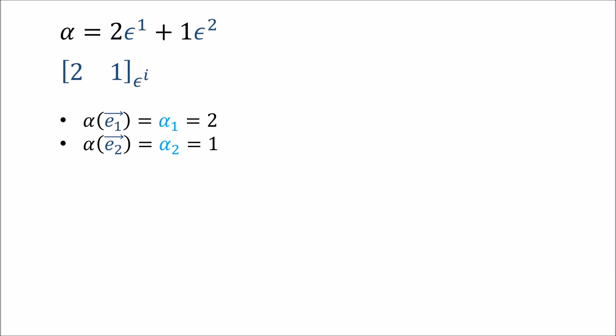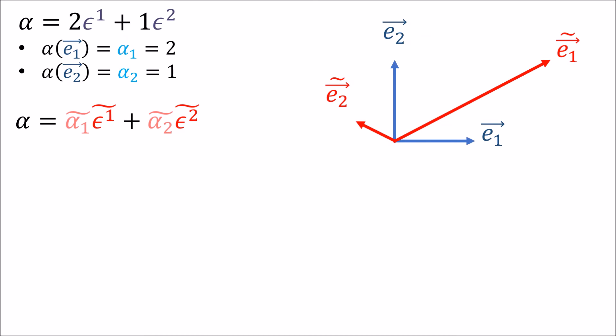Let's say we have a covector which is represented in the old covector basis, the epsilons, and has components [2, 1]. What would those components look like in the new covector basis, the epsilon tildes? Well, all we need to do is apply alpha to the new basis vectors, ẽ₁, ẽ₂. So let's start working this out.